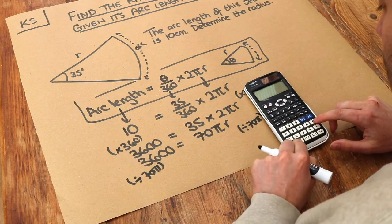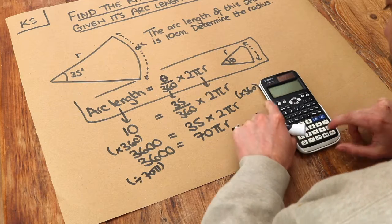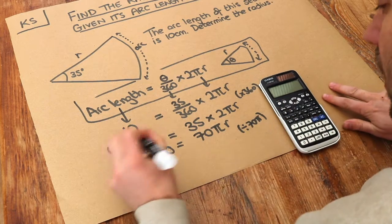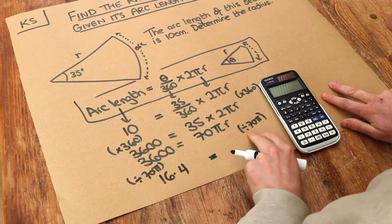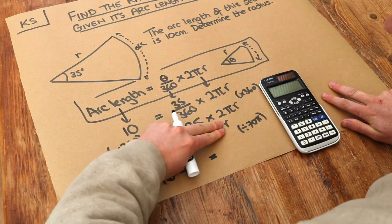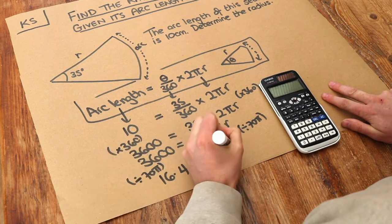So I do 3600 divided by 70π. That gives me 16.4 to three significant figures. Dividing by 70π gets rid of that times by 70π, leaving just r.